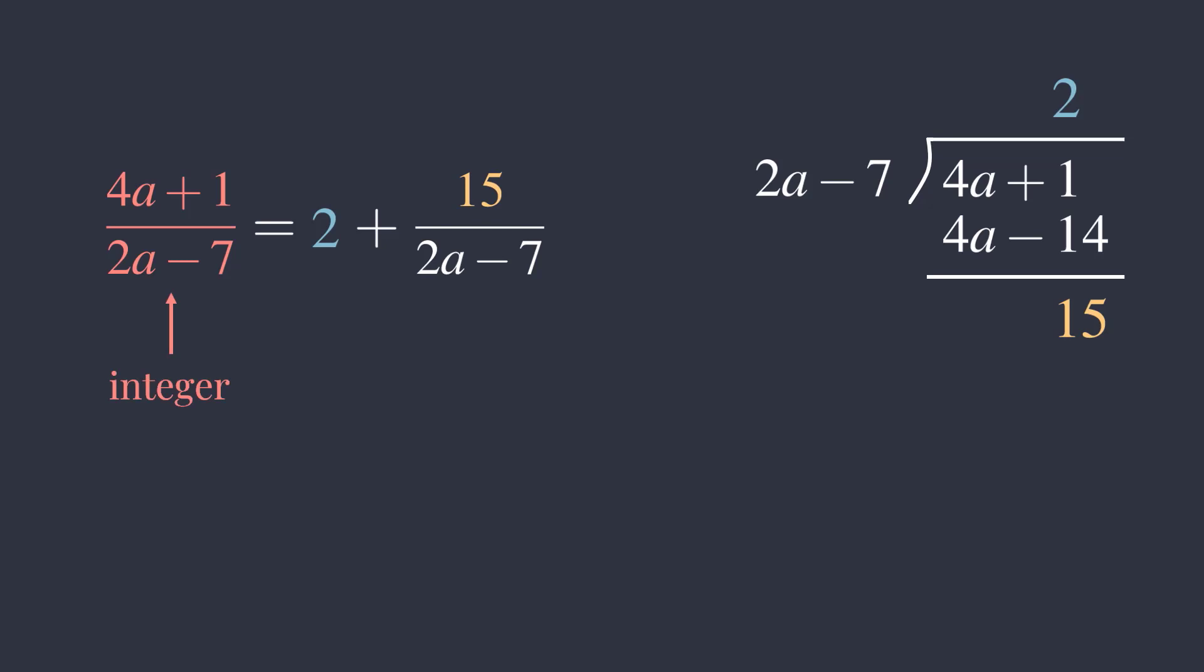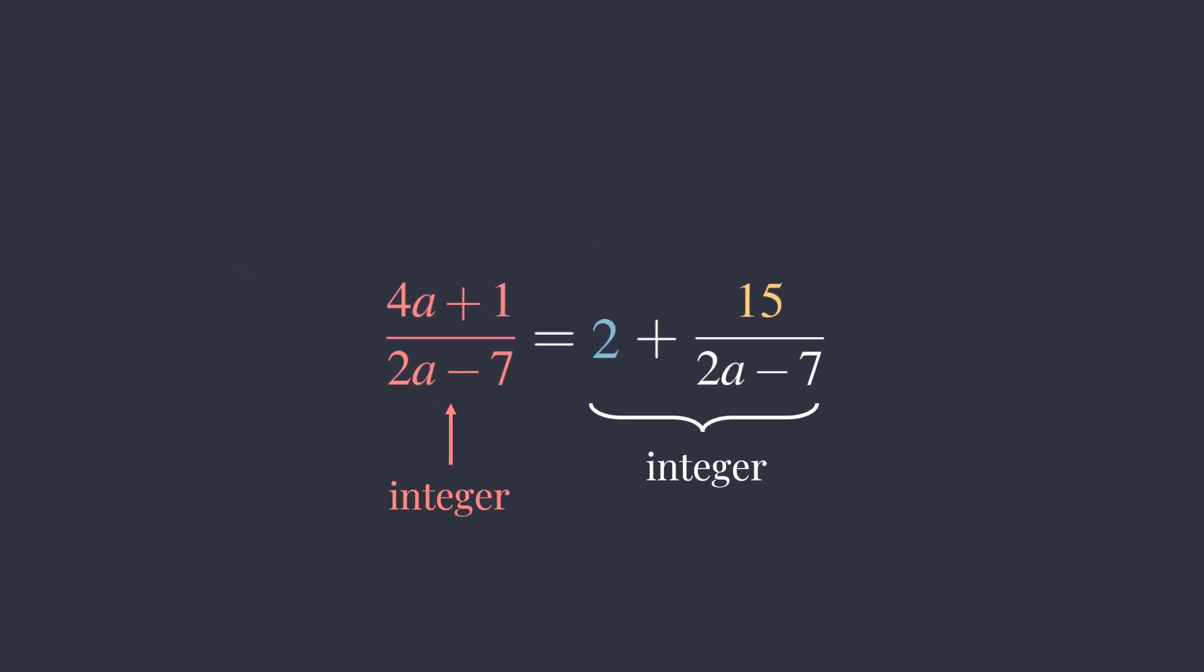Since our original expression is an integer, this right side must also be an integer. Now, because 2 is an integer, in order for the whole expression to be an integer, 15 over 2a minus 7 must also be an integer.